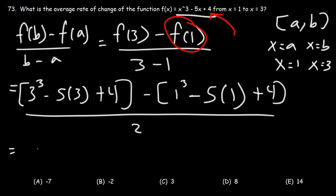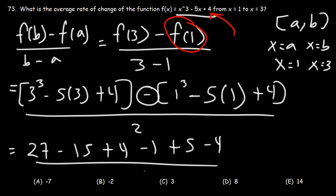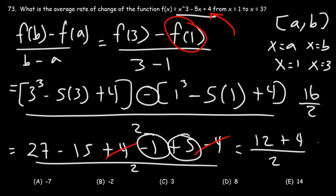Now, 3 to the third power, that's going to be 3 times 3 times 3, that's 27. 5 times 3 is 15, and don't forget to distribute the negative sign. So we're going to have negative 1 plus 5 minus 4. We could cancel 4 and negative 4. 27 minus 15 is 12. Negative 1 plus 5 is 4. So 12 plus 4 is 16. 16 divided by 2 is 8. So the average rate of change is 8. So D is the right answer.